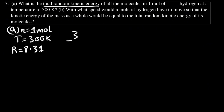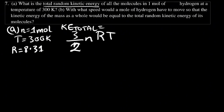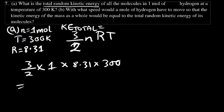So the total random kinetic energy = (3/2) × n × R × T = (3/2) × 1 × 8.31 × 300 = 3739.5 Joules per mole.